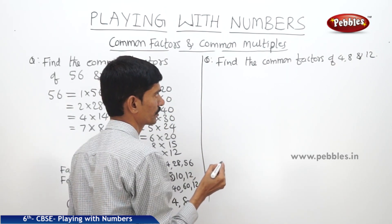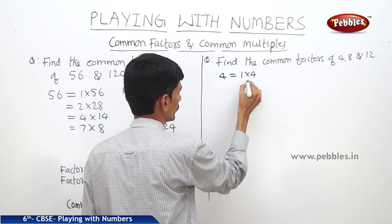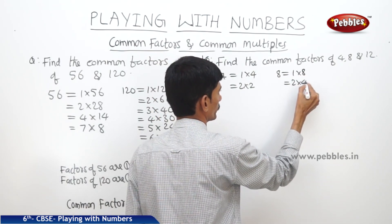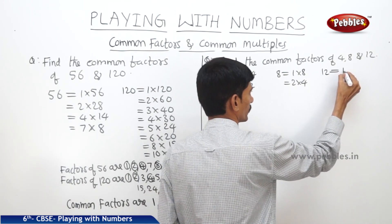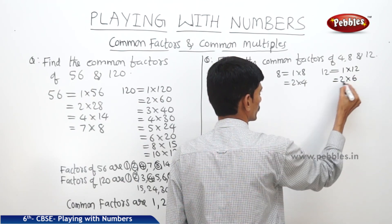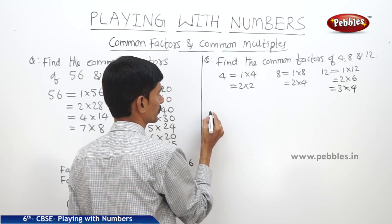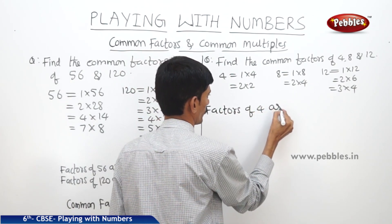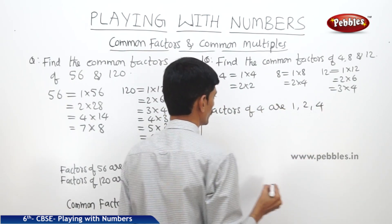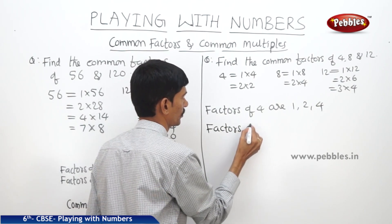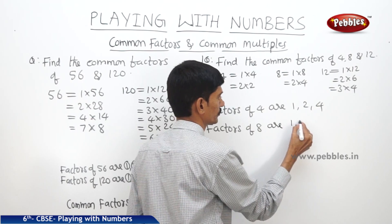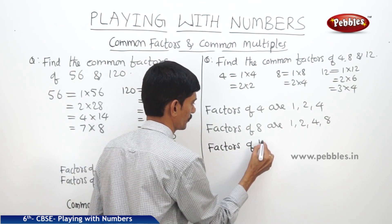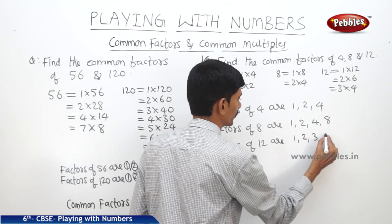Now let us find the common factors of 4, 8 and 12. The factors of 4 can be written as 1 into 4 and 2 into 2. The factors of 8: 1 into 8, 2 into 4. The factors of 12: 1 into 12, 2 into 6, 3 into 4. So the factors of 4 are 1, 2 and 4. The factors of 8 are 1, 2, 4 and 8.